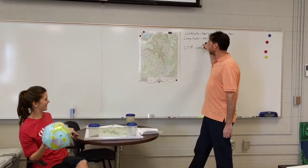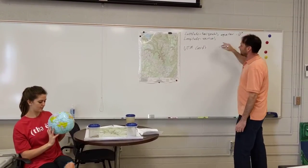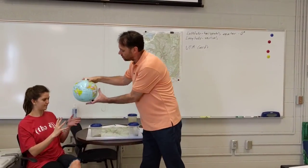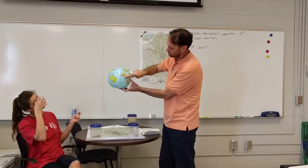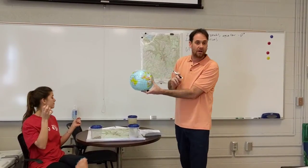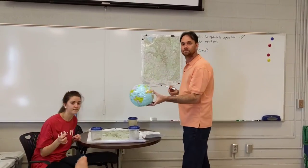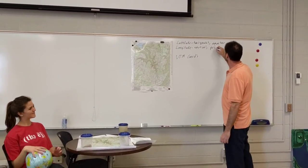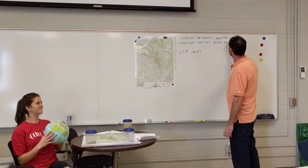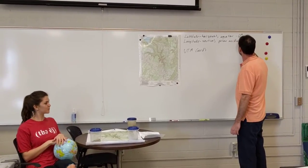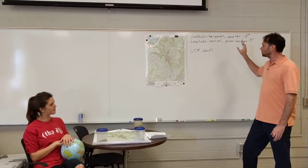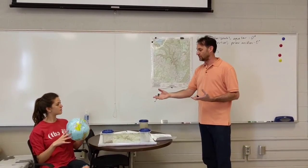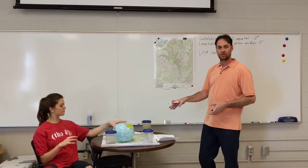And what about longitude? Longitude has a zero degree line as well. It runs through Greenwich, England, shown dashed on your globe. What's the name of it, Emma? Prime Meridian — Prime Meridian is correct. These are where we start from when we begin measuring latitude and longitude and locating places on the globe.